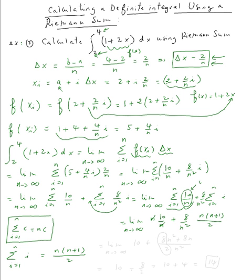Simplifying: n times ten over n becomes ten. For the second term, eight over n squared times n(n+1)/2 gives eight(n squared plus n) over two n squared. Since the degrees are the same, taking the limit as n goes to infinity gives eight over two, which is four. So the final answer is ten plus four, which equals fourteen.